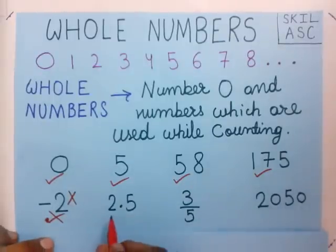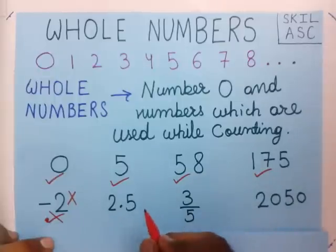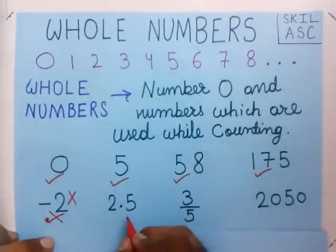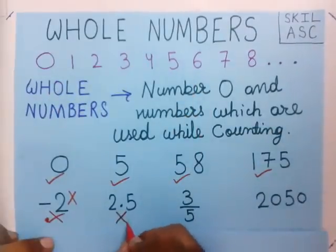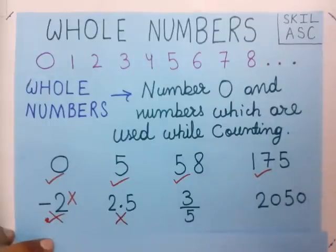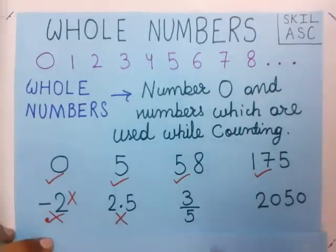Now, 2.5 — this is a number with a decimal point. Numbers with a decimal point are not included in whole numbers, so this is not a whole number. And 3/5 — fractions are not included in whole numbers. These are not used while counting and are not 0, so these are not whole numbers.